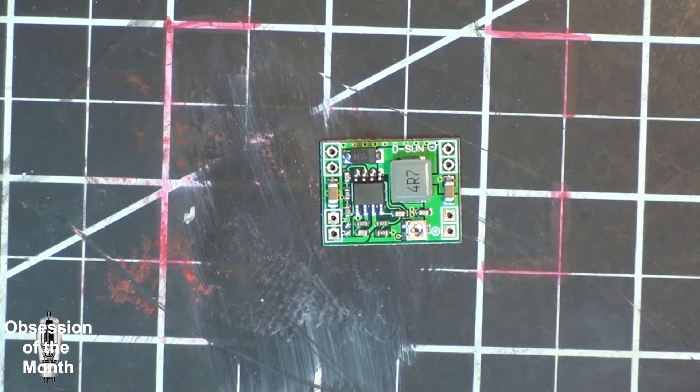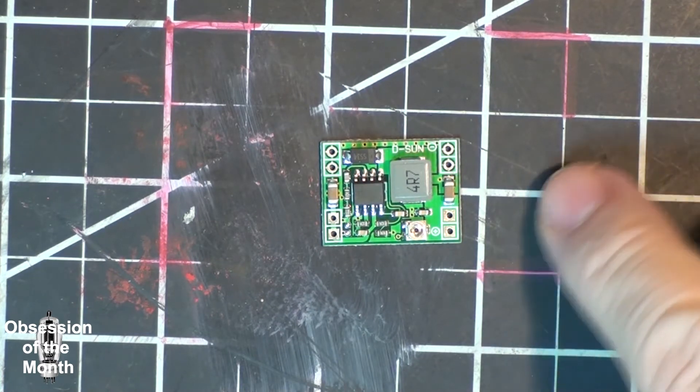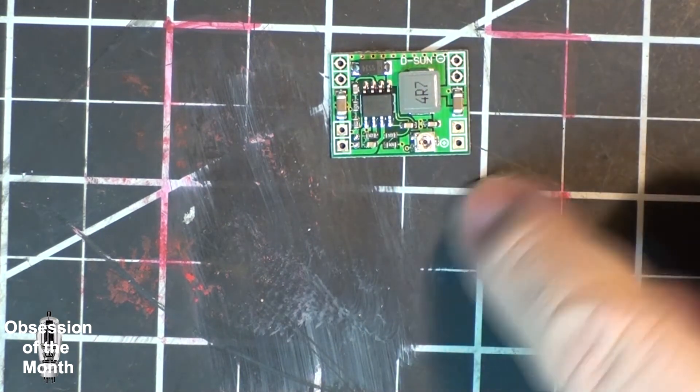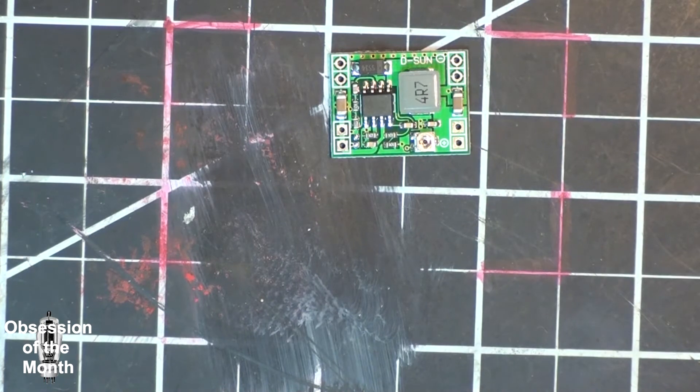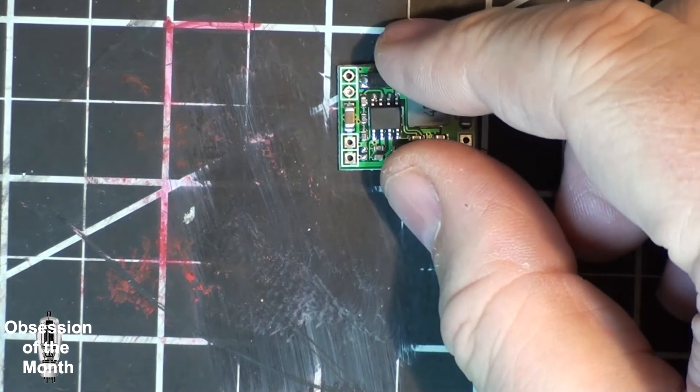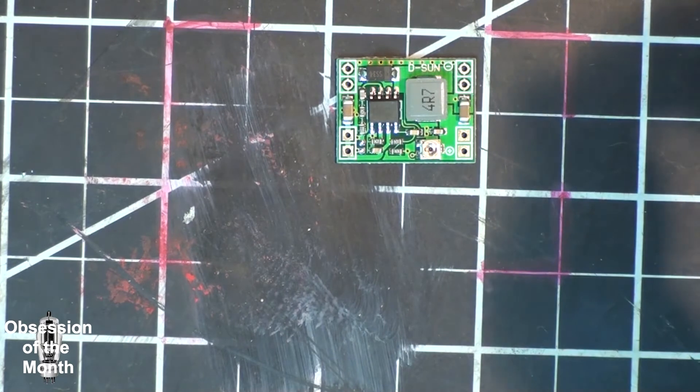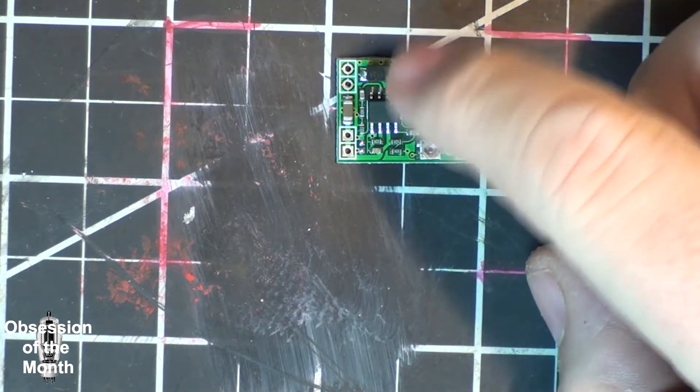This thing can actually be stuck with double-sided tape to the backside of the fan or just about anywhere. It's very tiny. Let's see what we got here. As you can see it's smaller than an inch. These markings here are one inch. Its actual size is 22 by 17 by 4 millimeters, that's 4 millimeters high.